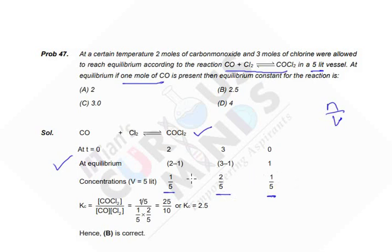What is K value? We know that product concentration raised to stoichiometric coefficient. Here is 1, so I will take just the concentration of COCl2 upon CO into Cl2. Here is 1 by 5 by 1 by 5 into 2 by 5. So I will get my answer of Kc as 2.5. So the B option will be correct. Thank you.